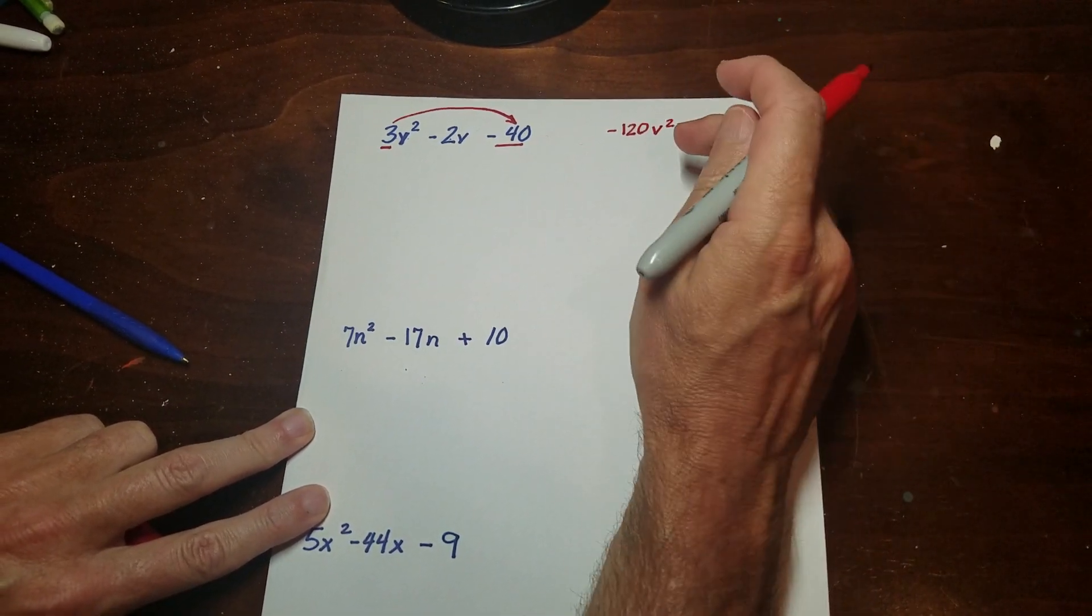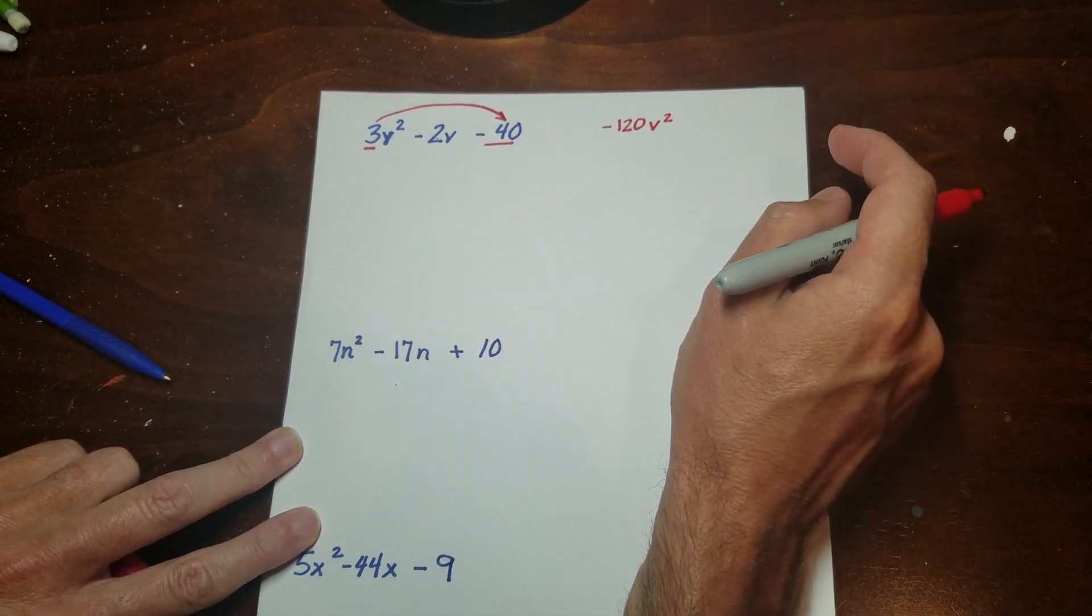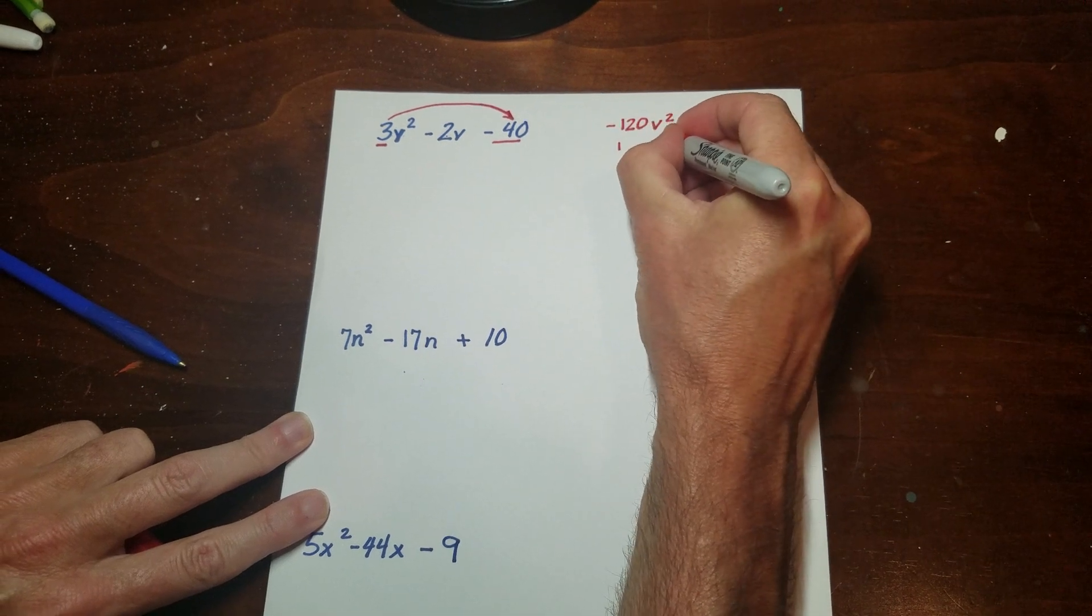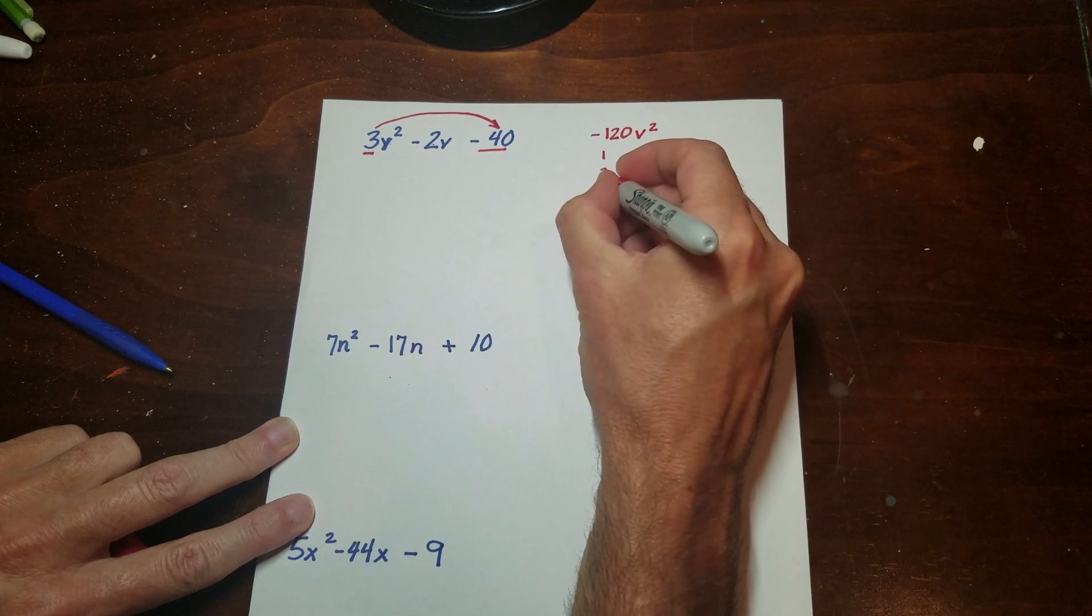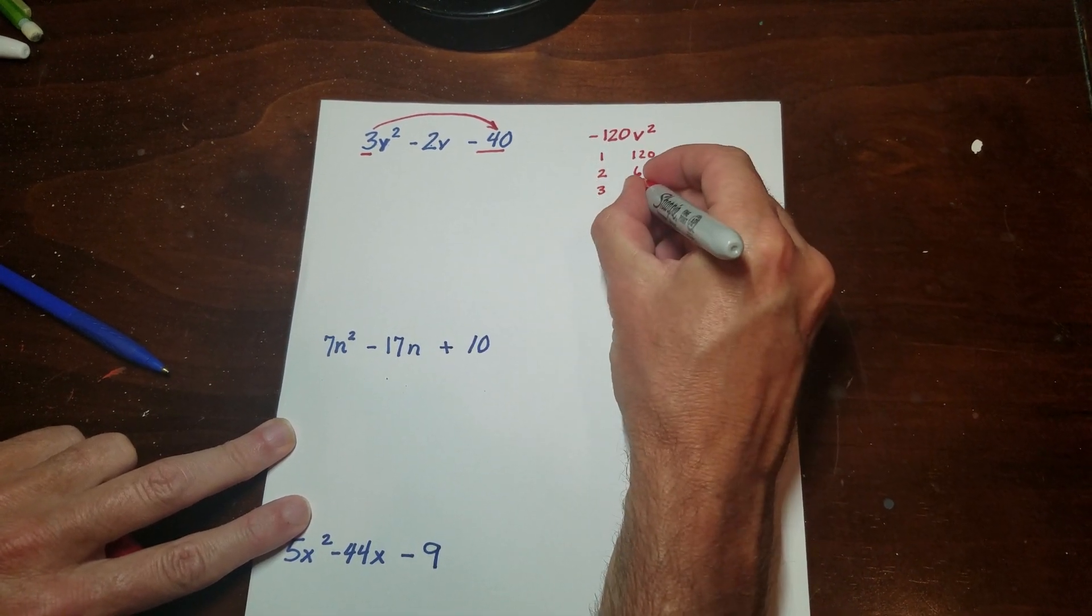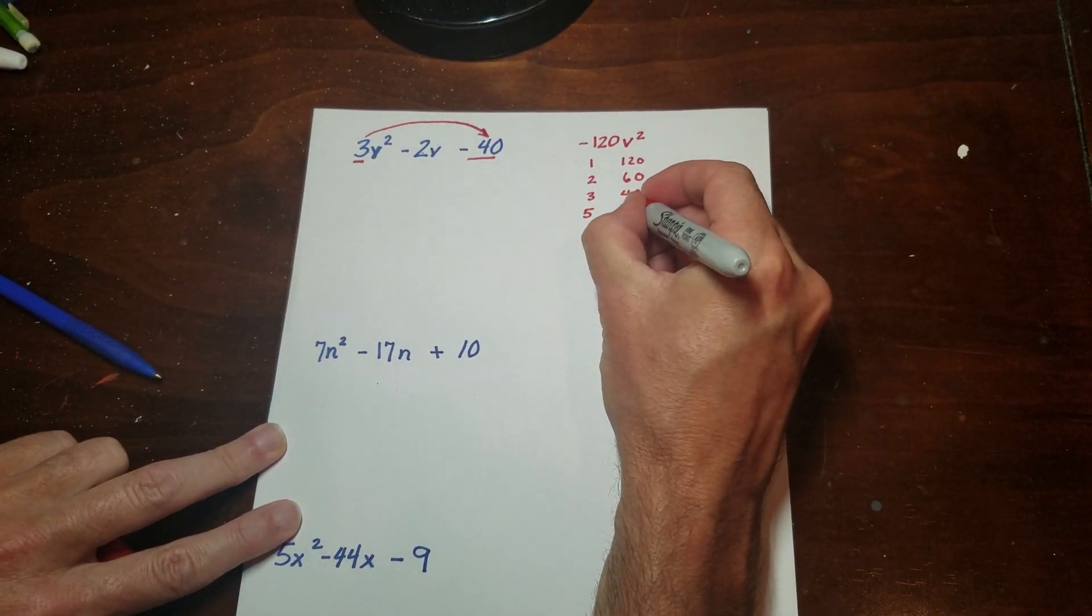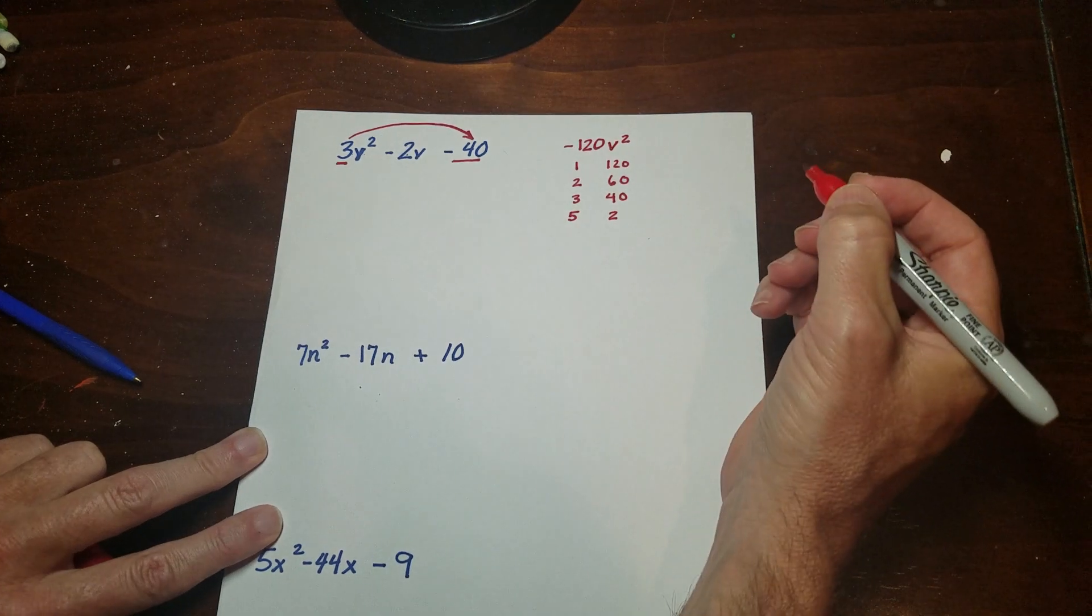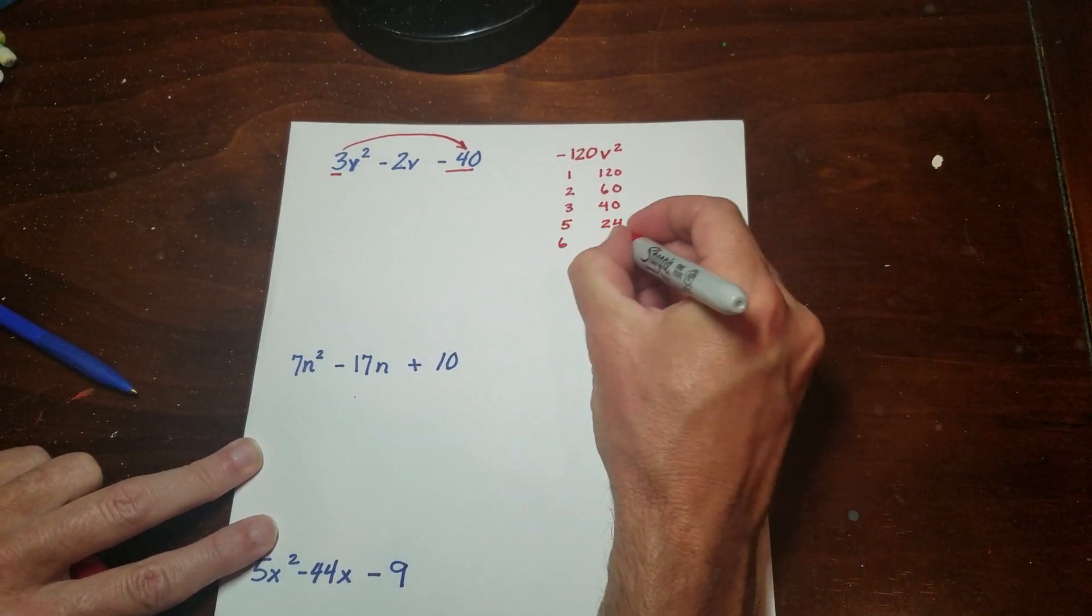So then what I'm going to do is, what we were doing before, I'm going to find all the factors of negative 120v squared. So I'm going to start listing them here. So I have 120. Now this might seem like a really big number, but they break down pretty quick as you can see. So 5 goes, I think it's 2, that's 10, 20, 24.